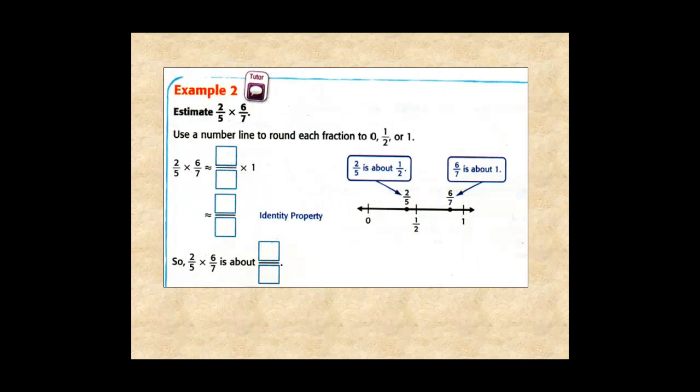For example 2, estimate 2/5 × 6/7. Using a number line, 2/5 is about 1/2, and 6/7 is about 1.